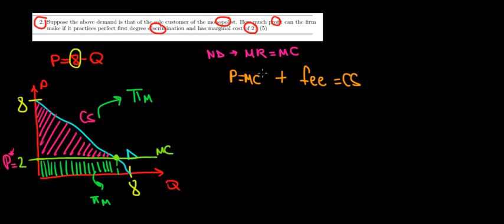Since he does price equals marginal cost, marginal cost equals two, the price is going to equal two. So two equals eight minus quantity, and the quantity that he's going to sell is equal to six units. He's going to sell six units.